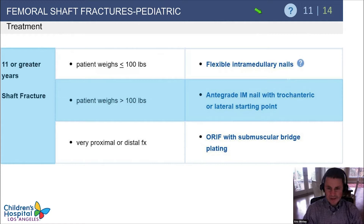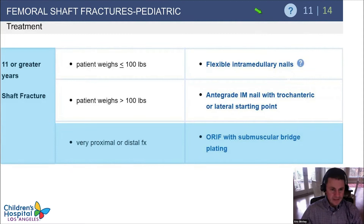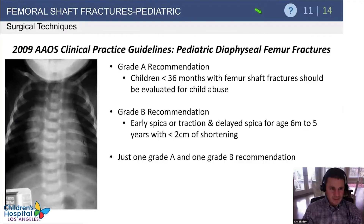For patients weighing more than 100 pounds, an antegrade nail with a trochanteric or lateral entry starting point is a great option. It's important to measure x-rays in advance to make sure the nail is not too large, though nowadays nails come in fairly small sizes. For very proximal or distal fractures, think about submuscular plates.